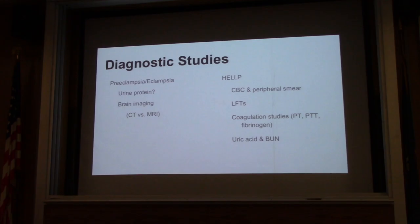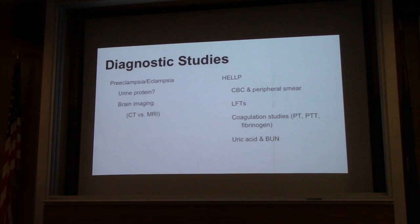You can always consider brain imaging — CT versus MRI — if you have a high level of suspicion, if they're developing focal neurological deficits or weakness, or altered mental status. In terms of studies used for HELLP syndrome, all things that would make the diagnosis include CBC, peripheral smear, LFTs, coagulation studies including fibrinogen, if you think DIC is in place, and BUN and creatinine.